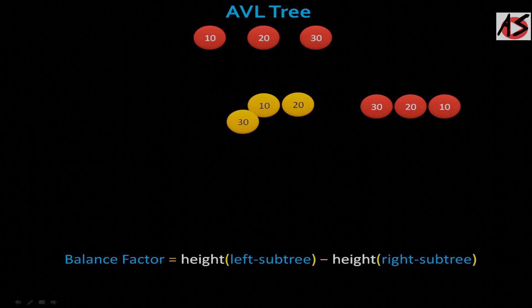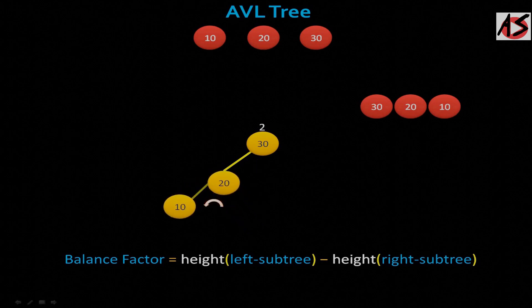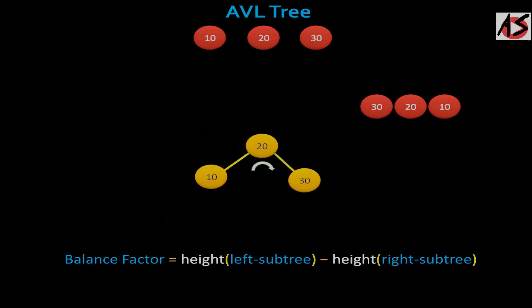Moving next, if you take 30, 10, and 20 in this way, that is left to right case. Here to balance the root node, you can rotate node 10 to the left and 30 to the right. You will get AVL tree.